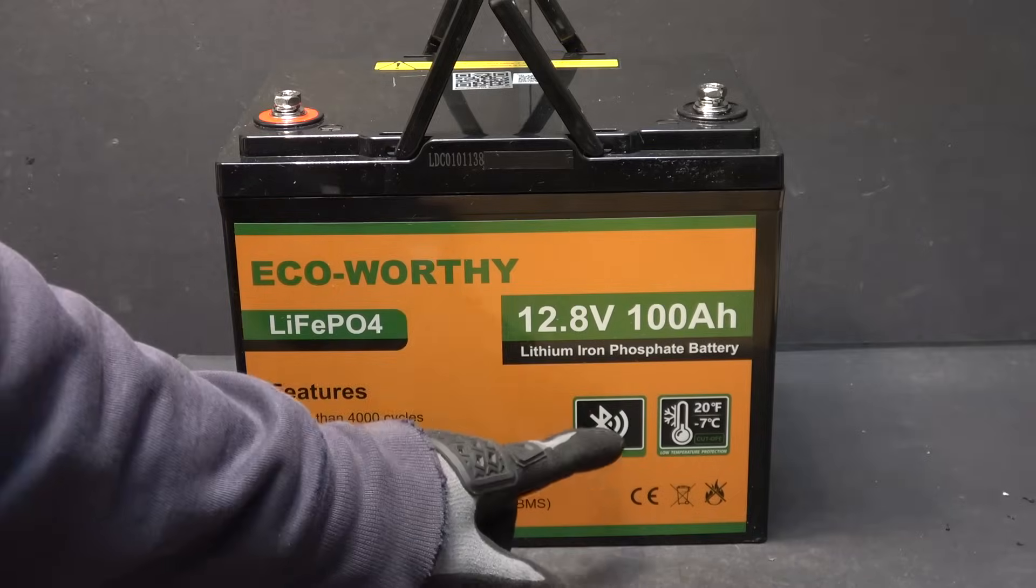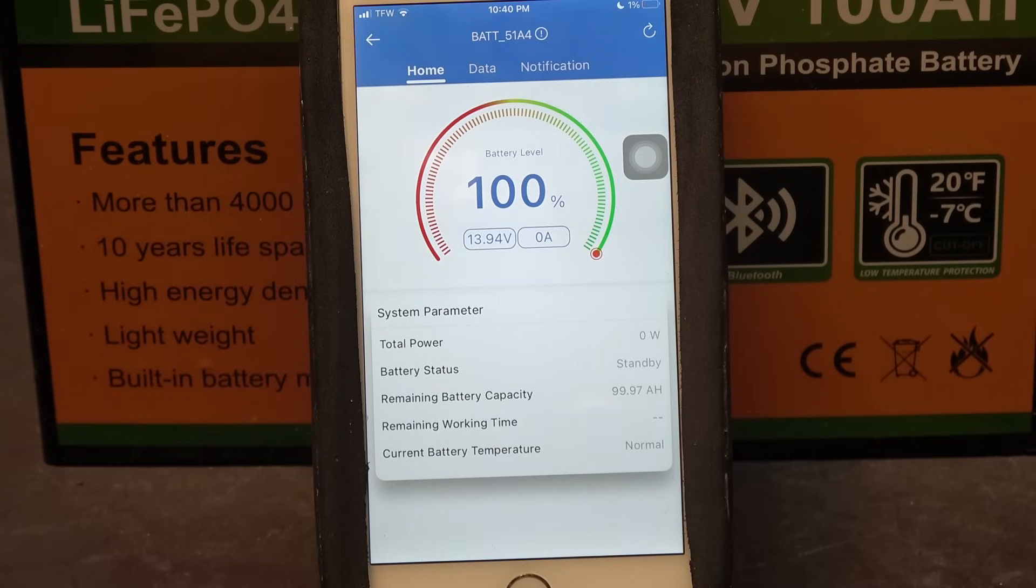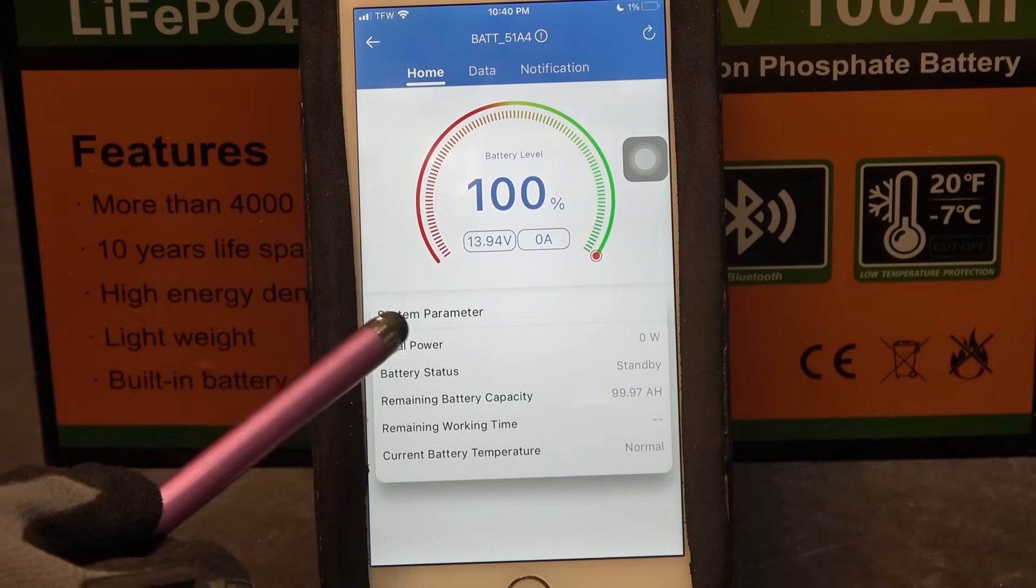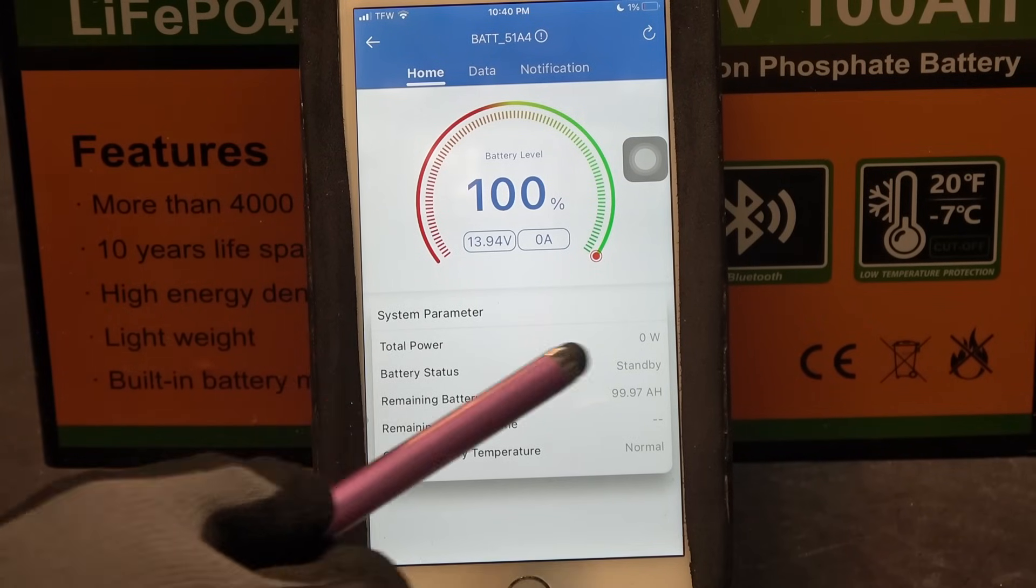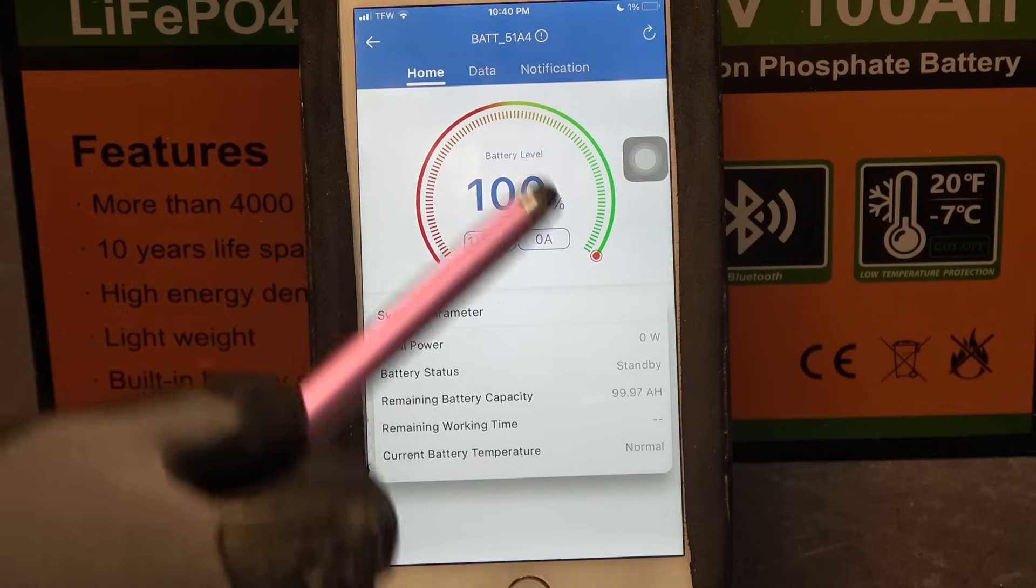It has Bluetooth control. So let's first go over the Bluetooth. First you gotta download the EcoWorthy app on your phone and this is the first page of the app. You got system parameter, total power 0 watts. It will show you how much power you're pulling out of the battery.